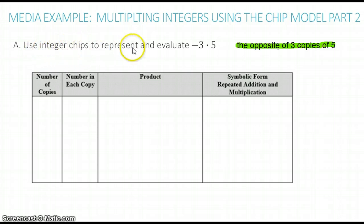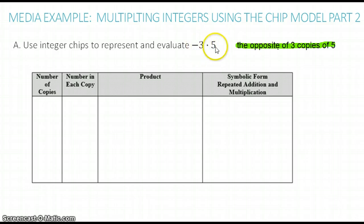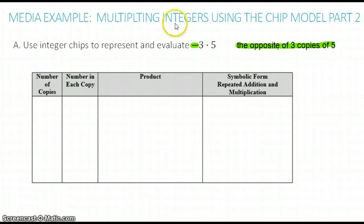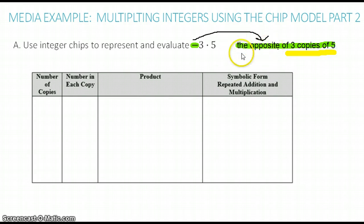Use integer chips to represent and evaluate negative 3 times 5. Before we used 3 copies of 5, but now we have a negative symbol. So what is negative 3 copies of 5? That's a little bit difficult to conceive of, so we're going to think of this instead as the opposite of 3 copies of 5. This negative symbol is going to correspond to 'the opposite of.'